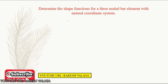Let us take one bar element. I am going to draw a diagram for a bar element. Each element has two end nodes: node 1 and node 2. Let us take one more node at the intermediate point of this element — this is node 3. At node 1, natural coordinate zeta 1 equals minus 1. At node 2, zeta 2 equals plus 1. At node 3, zeta 3 equals 0.